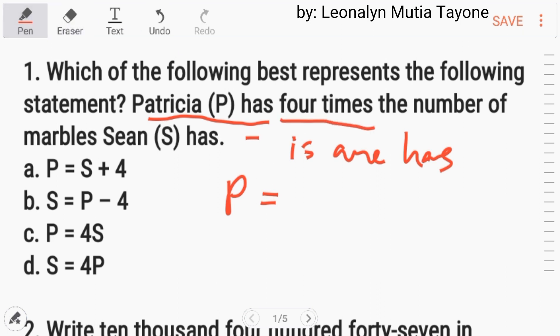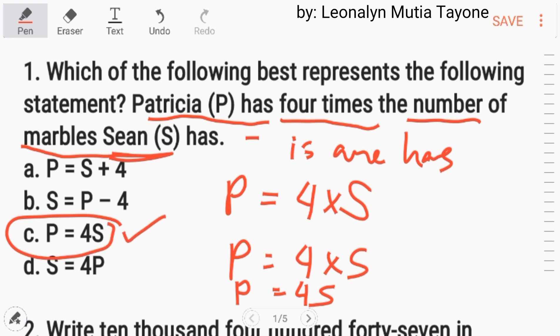Now, next, four times, four times the number of marbles Sean has. Let S be that number. So, four times S. P equals four times S. Or, P equals four S. So, the answer is letter C.